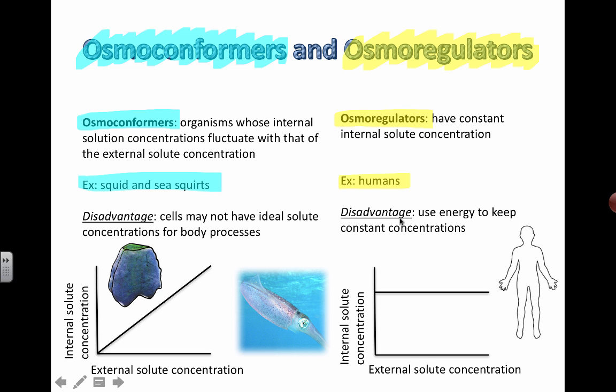The main disadvantage of being an osmoregulator is that it takes energy to keep internal concentrations within these limits. In the kidney, there's a lot of work — pumping salts back out and going through all those processes takes a lot of ATP. That means we have to eat more and figure out ways to generate that energy.